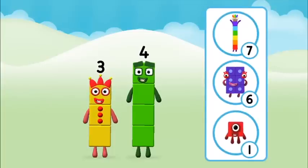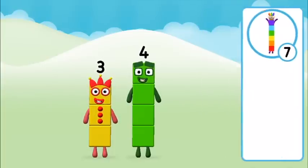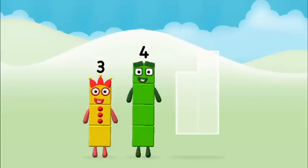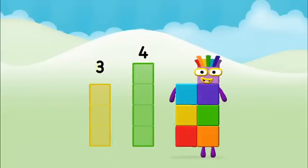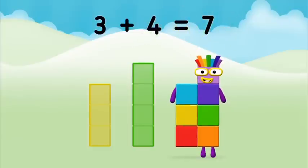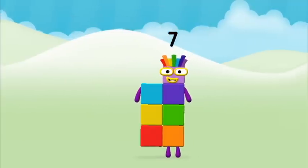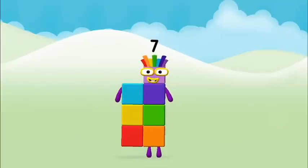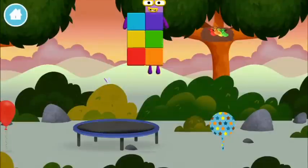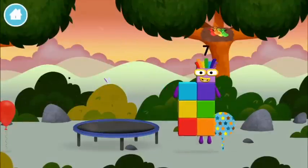Do you know which number block you'll make when you add these? Well done! You were right! Now can you add the number blocks together? Three. Three plus four equals seven! Brilliant! You made number block seven. You made a new number block.